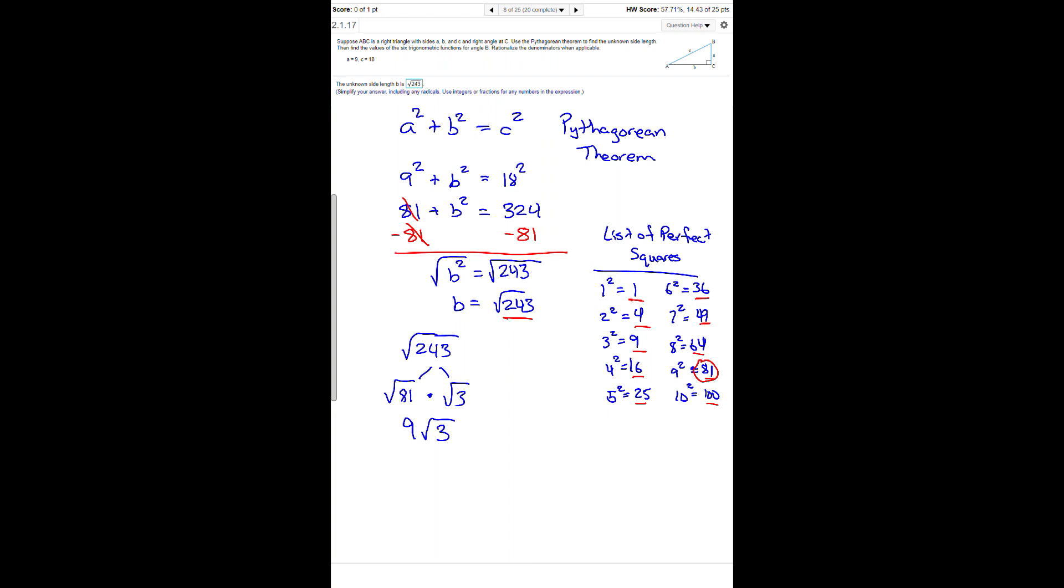At the very end, our simplified answer for the square root of 243 would be 9 times the square root of 3, or 9 square root of 3.